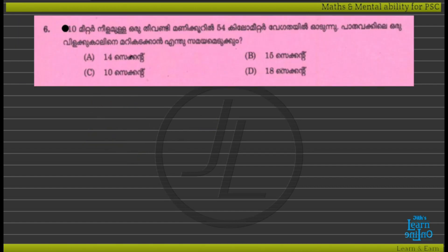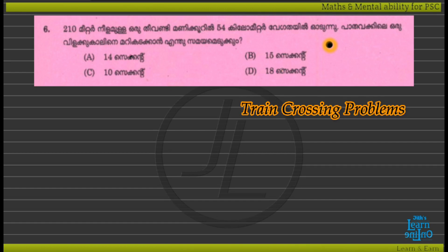Let's take a look at the train crossing problem. We have discussed all the various varieties in the previous videos. I will show you the link in the description below. There are two things: the distance between the train and the length of the train. The two things are the speed, length, and matching units. The speed is in kilometers per hour.